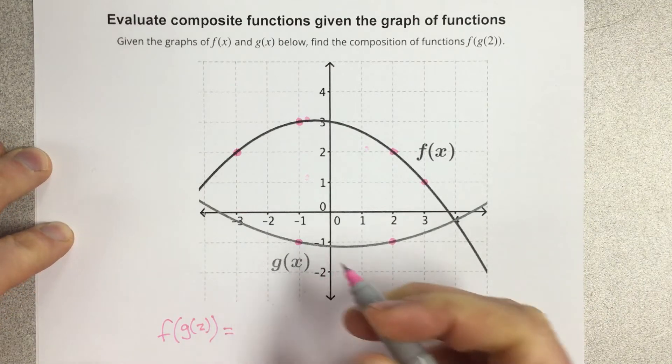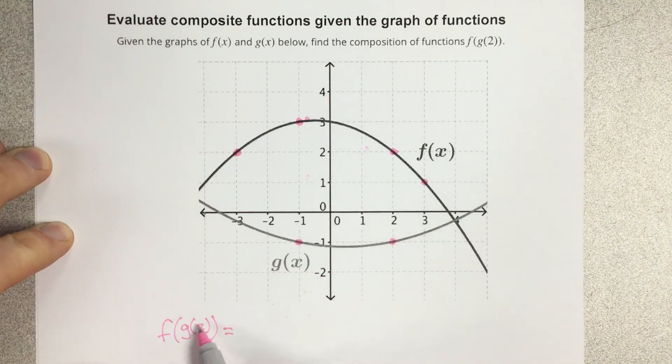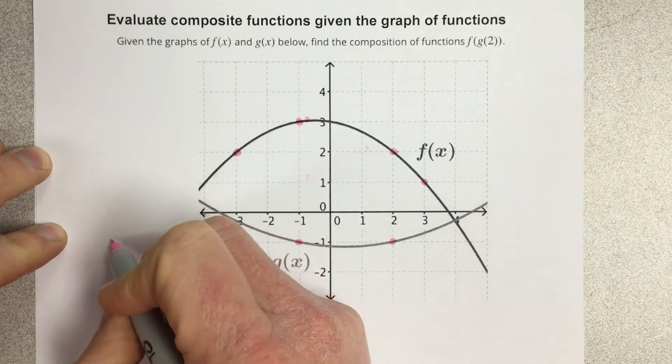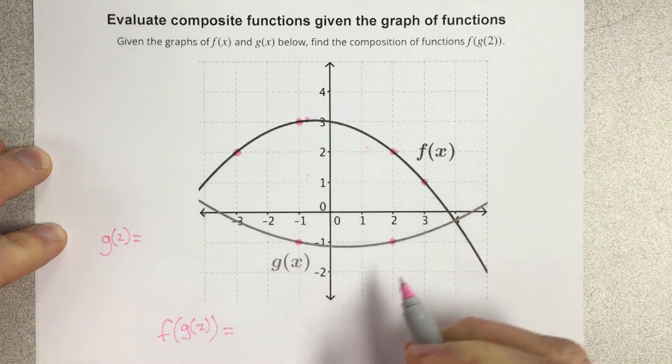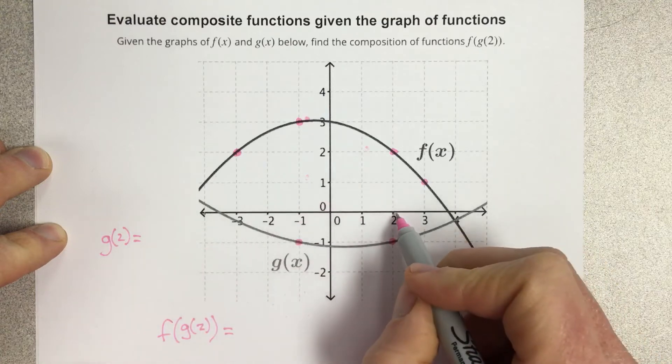And that equals, so we're going to start with g of 2. We're going to write that out to the side here. We want to figure out what the output is for g of 2. Well, first of all, we need to go to the x value of 2, which is here.